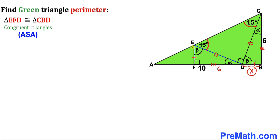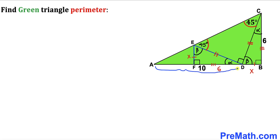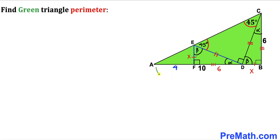Now let's make an observation. We know segment AD is 10 and segment FD is 6, so the remaining segment AF is 10 minus 6, which gives us 4 units. Furthermore, the whole length AB is going to be 10 plus X.